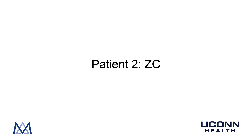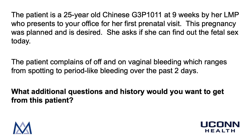Let's start off by learning a little bit about our patient, ZC. ZC is a 25-year-old Chinese G3P1011 at 9 weeks by her last menstrual period who presents to your office for a first prenatal visit. This pregnancy was planned and is desired. She asks if she can find out the fetal sex today. The patient complains of off-and-on vaginal bleeding ranging from spotting to period-like bleeding over the past two days. What additional questions and history would you want to get from this patient?